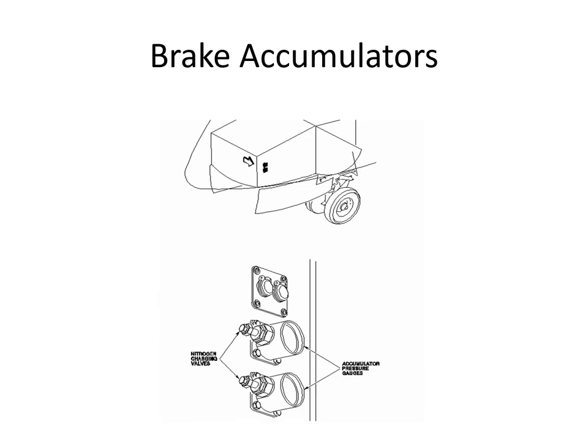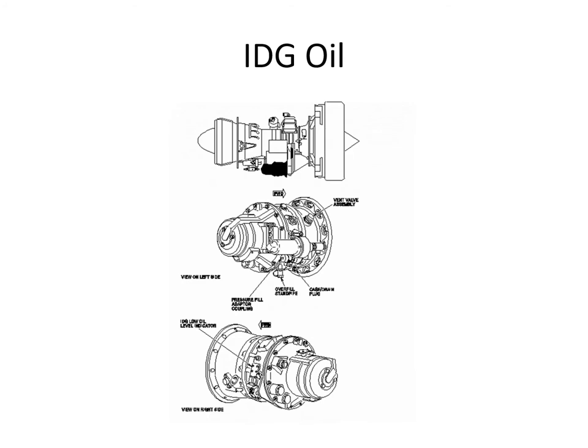There are two brake accumulators with charging points located in the nose wheel well. The IDGs on each engine have their own oil supply — there's a vent valve you push in to vent the IDG, then a fill point and an overfill standpipe. You fill it and allow the oil to come out the standpipe, then stop pumping and let the overfill standpipe drain. We'll look at the IDG oil in more detail when we cover the electrical system.